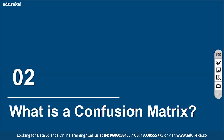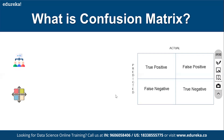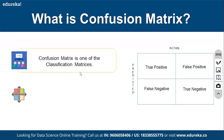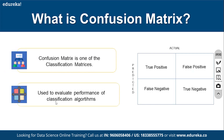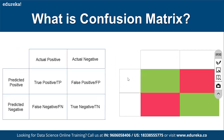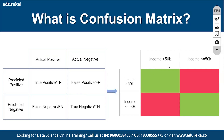Confusion matrix is a performance evaluation tool for classification models, used to evaluate how well the model is performing. The green diagonal represents correctly classified records, and the red off-diagonal represents incorrectly classified records. As an example, let's say the target variable (dependent variable) is whether a person's income is greater than 50k or less than 50k - yes or no. That is my actual output.